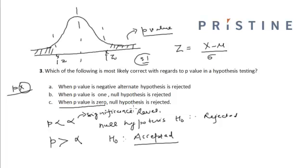However, when p value is 0, the null hypothesis is rejected, because when p value is 0, it will definitely be less than alpha, that is the significance level. And in this case the H0, that is the null hypothesis, is rejected. So the correct option is option C.